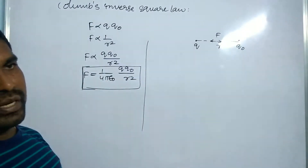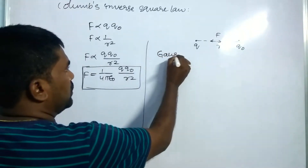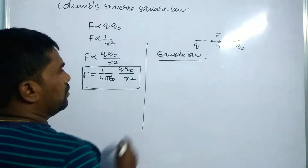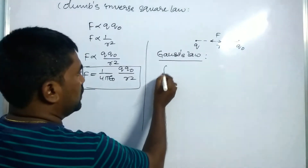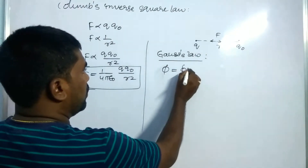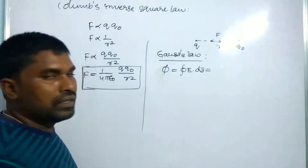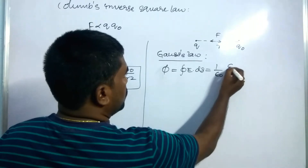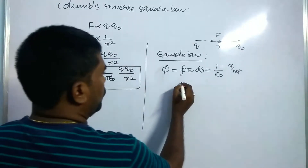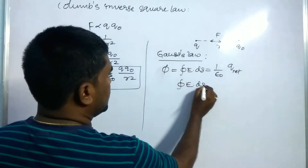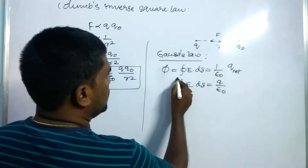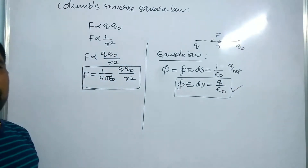Now, coming to the Gauss law in electrostatics. Gauss law states that the net electric flux through any closed surface is equal to the closed surface integral of E·dS, which equals (1/ε₀) times the charge enclosed by the surface, Q_net. So we can write: ∮E·dS = Q/ε₀. This is the Gauss law in electrostatics.